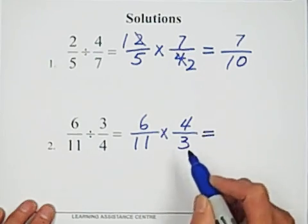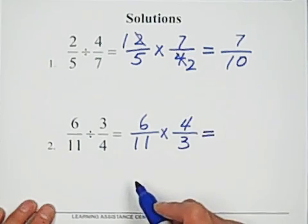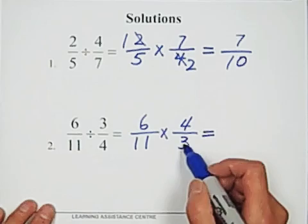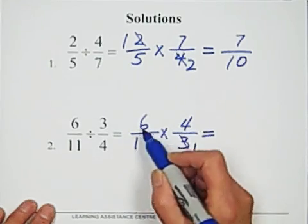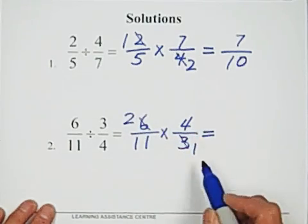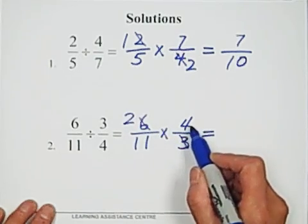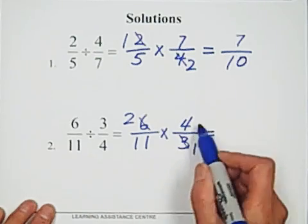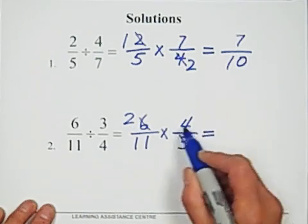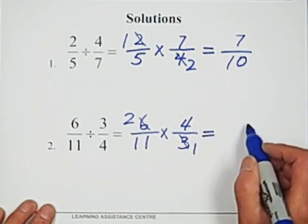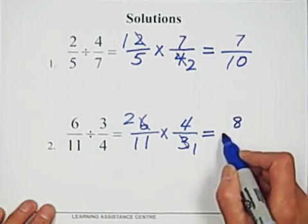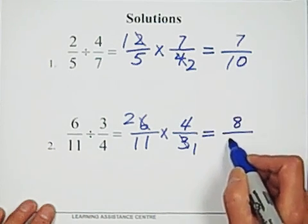Check for common factors: six and three can be reduced — divide by three to get two and one. No other common factors, so multiply: two times four over eleven times one gives eight over eleven. That is the answer.